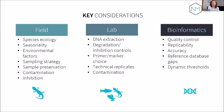To wrap up: key considerations in the field include species ecology, seasonality, environmental factors, sampling strategy, sample preservation, and measures to account for contamination and potential inhibition. In the lab: DNA extraction method, controls to check for degradation and inhibition, primer and marker choice, number of technical replicates, and contamination mitigation. With bioinformatics: quality control, replicability and accuracy of results, gaps in the reference database, and thresholds applied to sequencing data to account for false positives and false negatives.